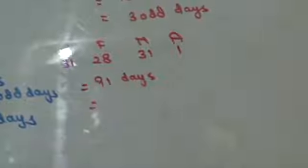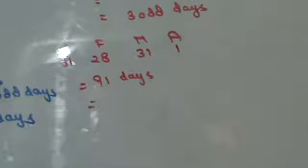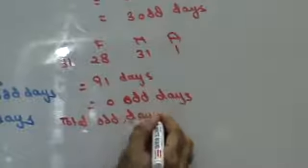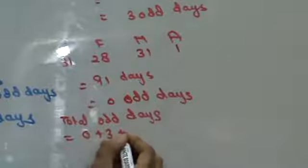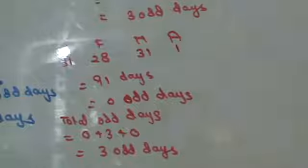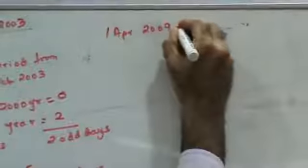From 1st January to 1st April 2009: Jan=31, Feb=28 (2009 not a leap year), Mar=31, Apr=1 — total 91 days. 91 divided by 7 = remainder 0, so 0 odd days. Total odd days: 0 + 3 + 0 = 3 odd days, which corresponds to Wednesday. So 1st April 2009 was a Wednesday.